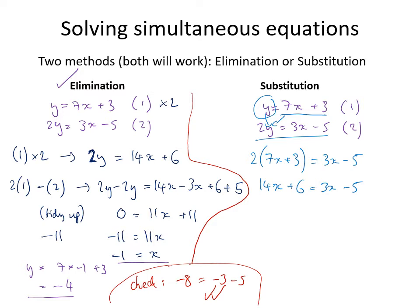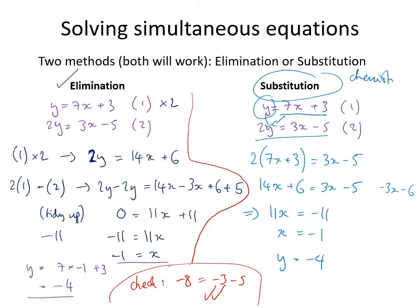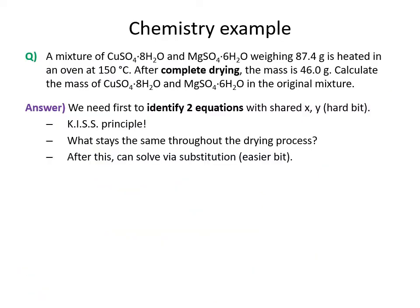Subtracting 3x and 6 from both sides gives 11x = −11, therefore x = −1 (dividing both sides by 11). Substituting back gives y = −4 — the same result as elimination. For chemistry examples with non-integer values, substitution tends to be simpler, though elimination can be quicker when it applies.